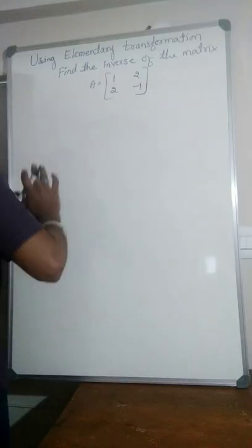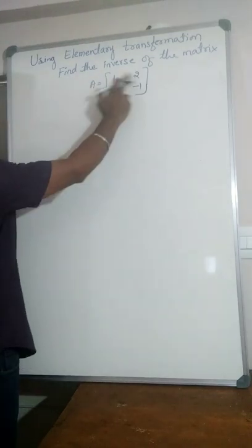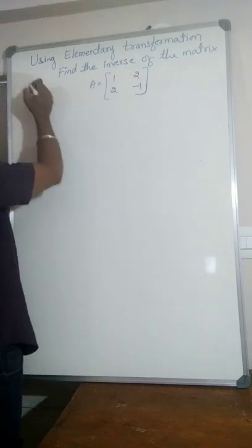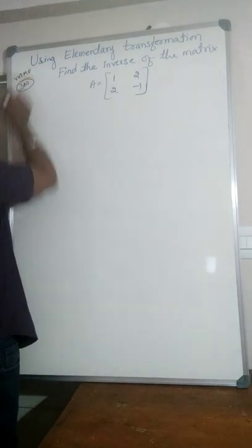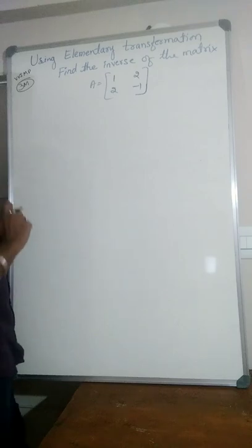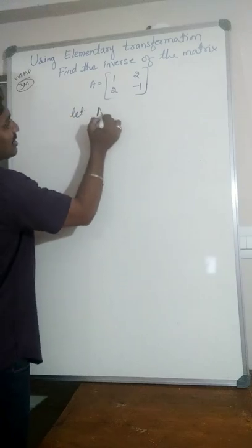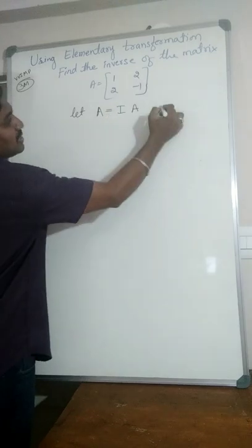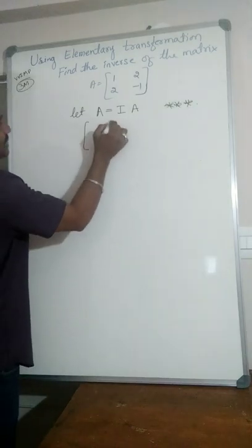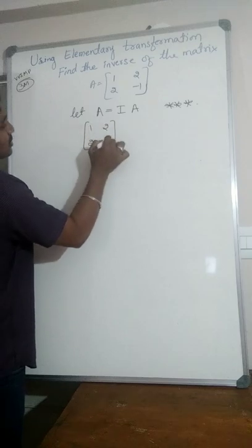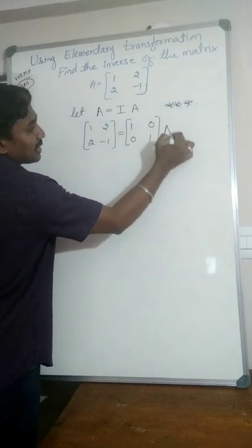This is a very, very important part for 3 marks — 100% you are going to get one question in your main examination. Let the matrix A equal 1, 2, 2, minus 1. The first step is to consider A equals I times A. Substitute: 1, 2, 2, minus 1 equals the identity matrix 1, 0, 0, 1 times A. Keep this equation and work to convert the left-hand side into the identity matrix.